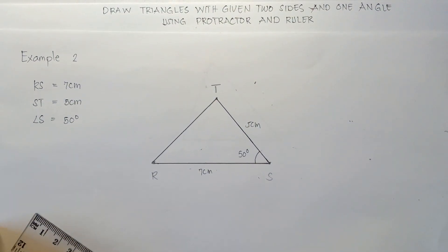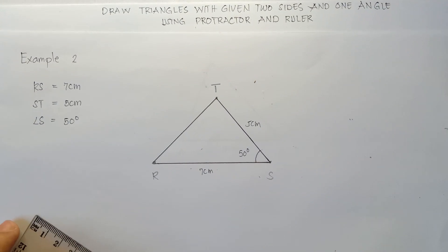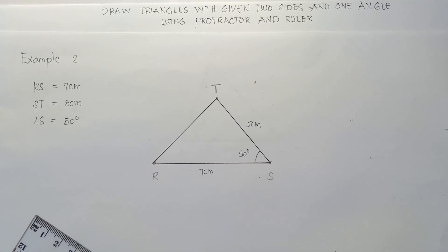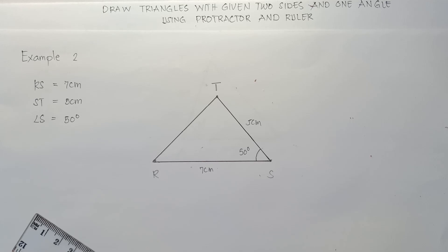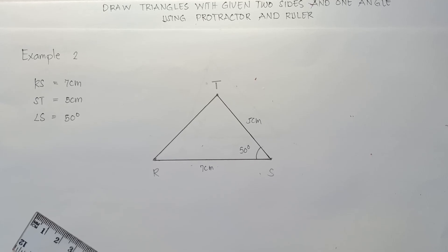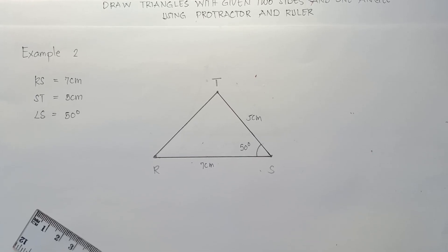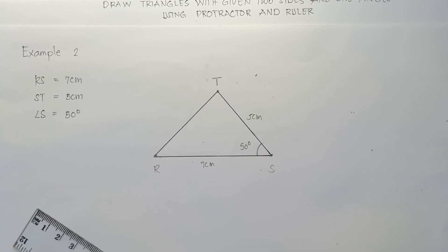That's how you draw triangles with given two sides and one angle using the protractor and the ruler. The next part of our video is how to draw triangles given three sides — I'll put the link in the description below. Do not forget to like, share, and subscribe, and share it with your friends and classmates so we can help more students. This is Teacher MJ — have a great day, class. Goodbye!